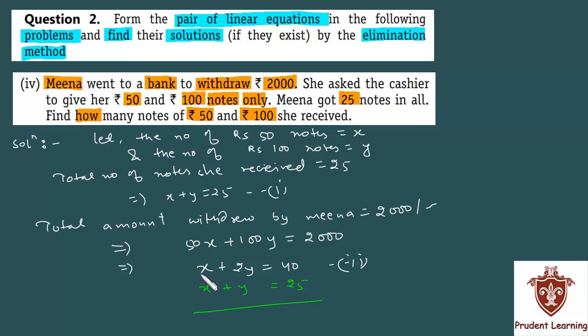Now see, since the coefficient of x is already the same, eliminating it will be easy. Just subtract, so this plus becomes minus, and this also minus. x cancels out, 2y minus y is y, and 40 minus 25 is 15. So you found that y equals 15.